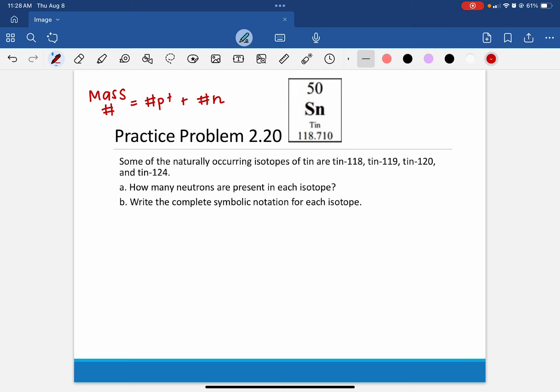Also, whenever you see some element name, a dash, and then some number, the number behind the element is going to be the mass number. So this is just another way of writing isotopes. It's not symbolic notation, but it is just another way.